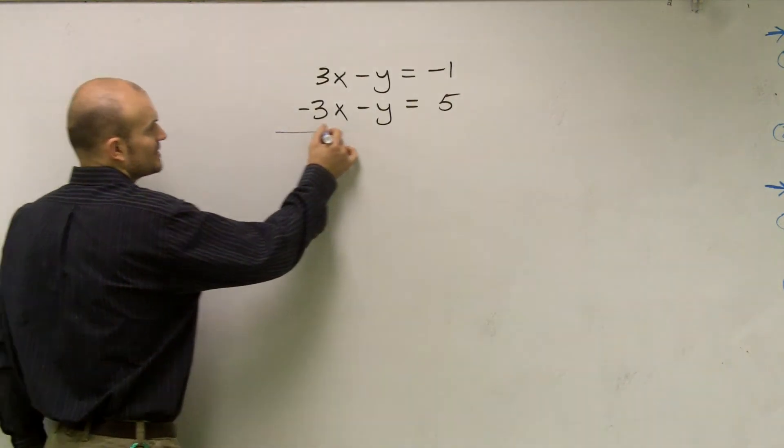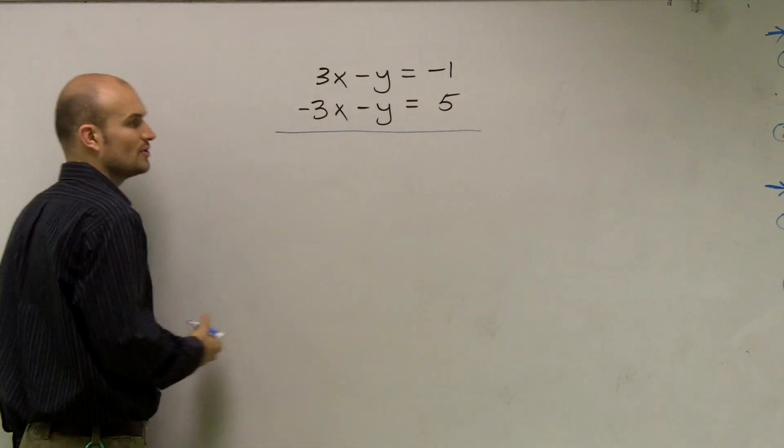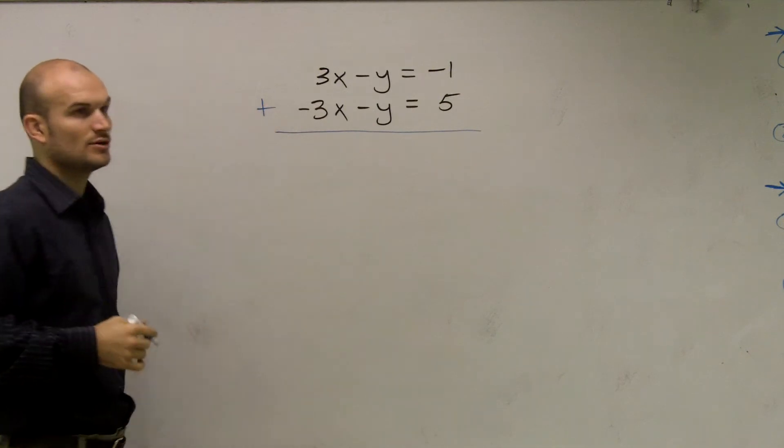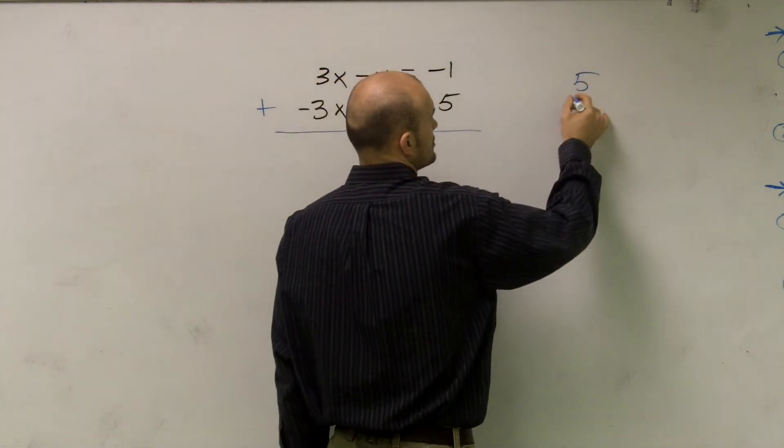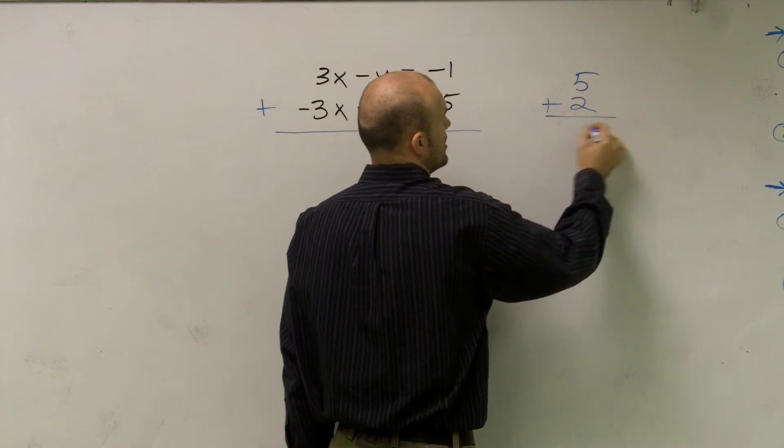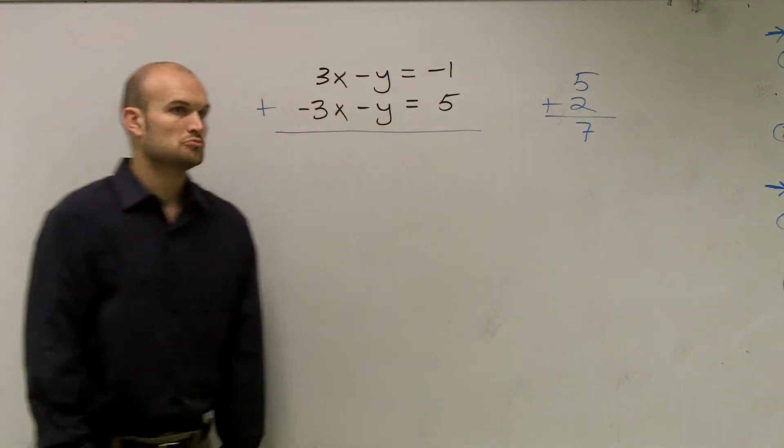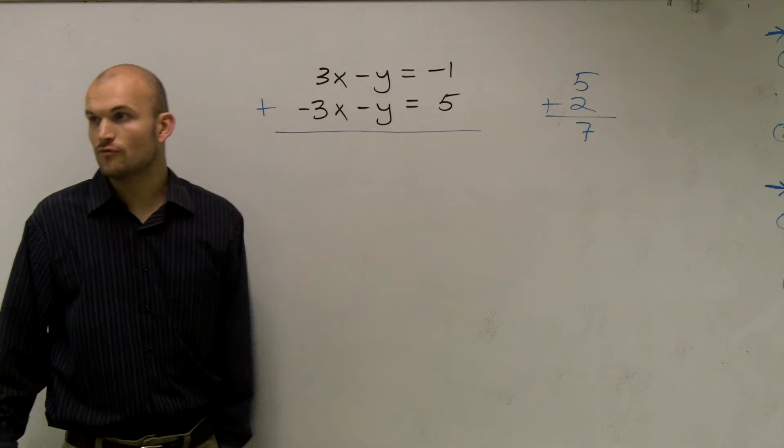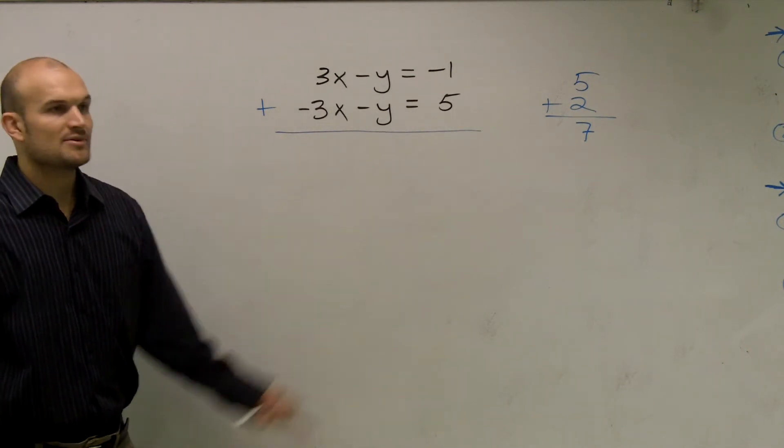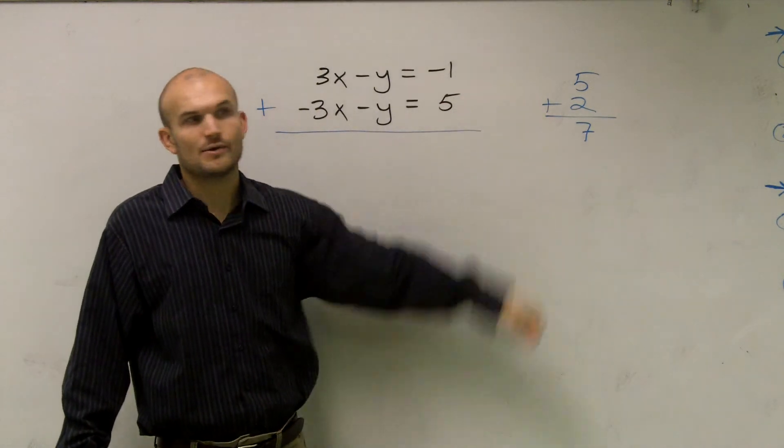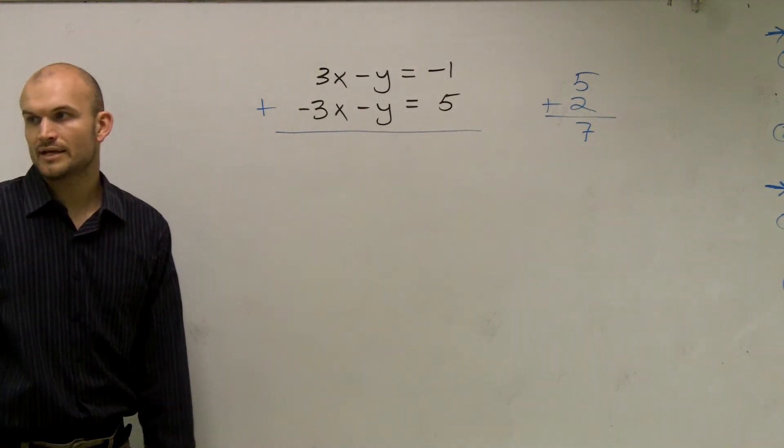So to use elimination with addition, all we're simply going to do is add the two equations up. So how do you add the two equations? Well, just like you guys used to add numbers. Just make a bar, add, and just go vertically down. Now, I'm just making this up, just how this is how you add. Okay? Jonathan, you got this right now?